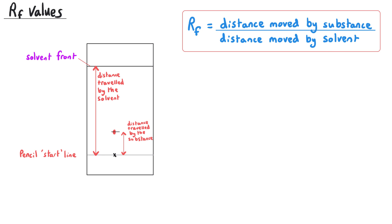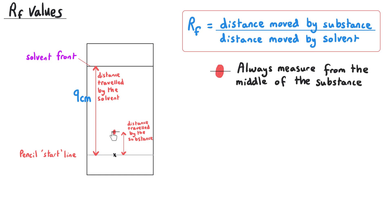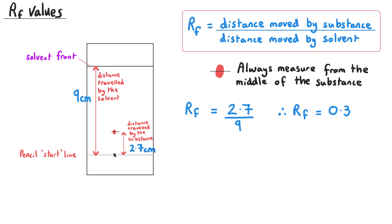We need to take some measurements, always starting from the pencil start line. The distance moved by the solvent is measured from the start line up to the solvent front — let's say we measured that as 9 centimetres. We then find the centre of the sample and measure down from the centre to the start line — perhaps this was 2.7 centimetres. We simply plug these values into the RF equation: 2.7 divided by 9, which gives us an RF value of 0.3.